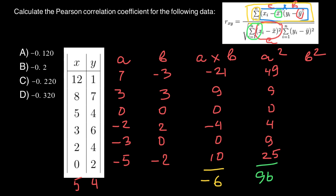For the last column, B squared: negative 3 squared is 9, three squared is 9, zero squared is 0, two squared is 4, zero squared is 0, and negative 2 squared is 4. We sum these numbers: 9 plus 9 plus 0 plus 4 plus 0 plus 4 gives us 26.